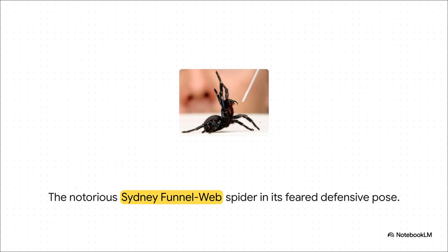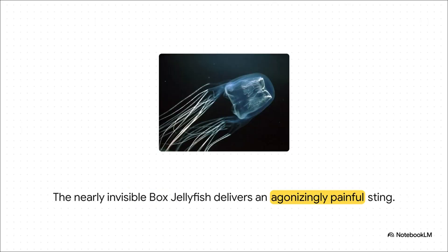Then you've got creatures on land, like the notorious Sydney funnel-web spider. When it feels threatened, it rears up into this aggressive pose, showing off fangs that are strong enough to bite right through a fingernail. It's a pretty clear and terrifying warning sign. And if you go for a swim, you might run into nearly invisible threats like the box jellyfish. Its sting is incredibly painful and can even be fatal. So the reputation is definitely built on some seriously intimidating animals. But the real question is, why? Let's get to the bottom of it.